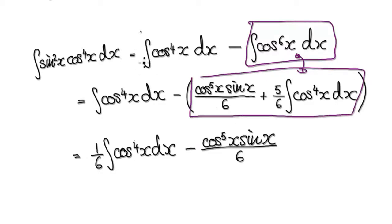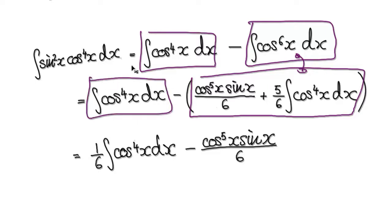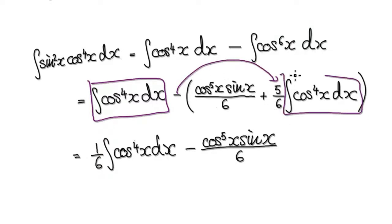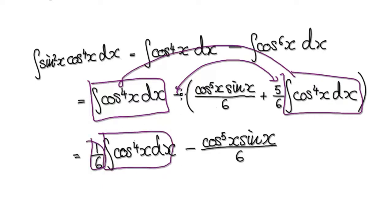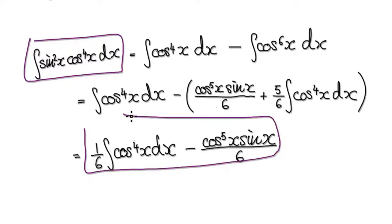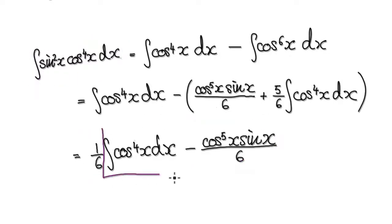So this block here is this block. So now what you've got is you've got one thing, and then you take away 5 over 6 of the exact same thing. So really, you can simplify this to 1 over 6 of that same thing. So this thing here remains this thing here — this whole thing here is equal to this thing here. So now all we need to do is evaluate this block here.